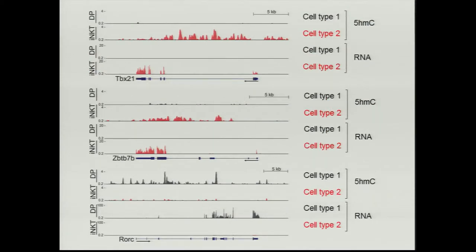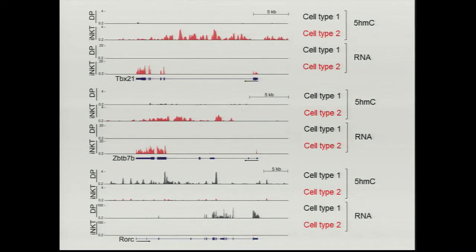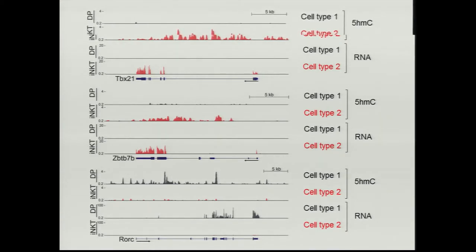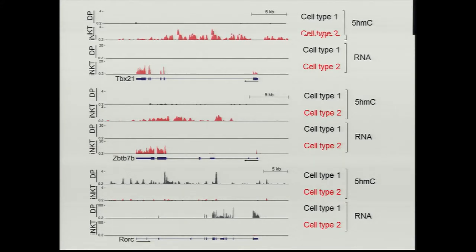This is also shown in an RNA-Seq 5-HMC picture where you can see — just calling them cell type 1 and cell type 2, two different kinds of cells in the thymus — that the 5-HMC levels and the RNA levels match very nicely. These two genes are expressed in cell type 2, and this one is expressed in cell type 1.